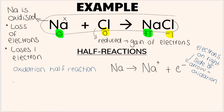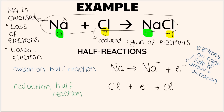Then we have the reduction half reaction. Chlorine, Cl, is reduced — it gains electrons. So: Cl + e⁻ → Cl⁻. If you gain a negative — an electron — you become negative. You gain one electron and get a charge of minus one.